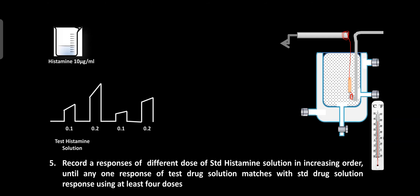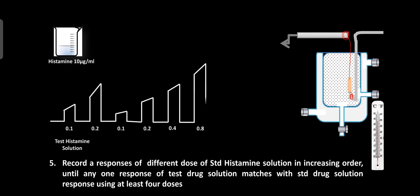After the washing period, record the baseline again, then add 0.4 ml of standard histamine solution and record the response for 30 seconds. After 30 seconds, stop the drum and change the Ringer's solution two to three times to completely remove the drug. After the washing period, record the baseline, then add 0.8 ml of standard histamine solution and record the response for 30 seconds. These are the standard histamine solution responses at 10 micrograms per ml.